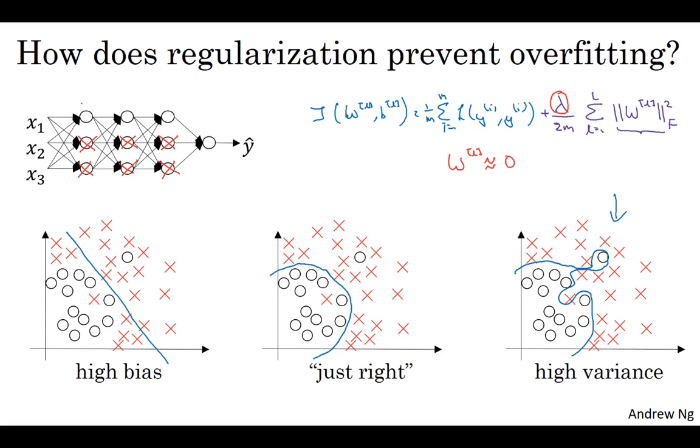And if that's the case, then this much simplified neural network becomes a much smaller neural network. In fact, it's almost like a logistic regression unit, but stacked multiple layers deep. And so that will take you from this overfitting case, much closer to the left toward the high bias case.